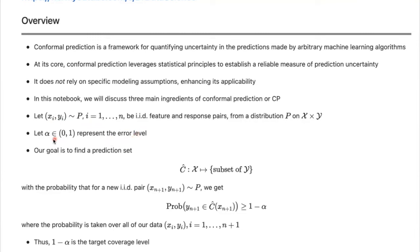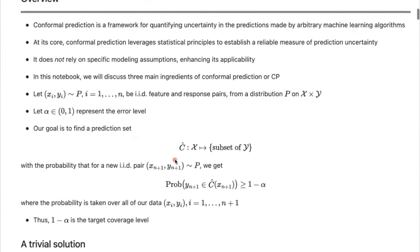The next assumption is that we have a parameter alpha that represents the error level. Typically we want alpha to be close to zero because we want a low error rate. The goal of conformal prediction is to find a prediction set C-hat — a mapping from the input space to a subset of the output space — with the probability that for a new test data point (index n+1), the ground truth output falls within this prediction set being at least 1 minus alpha.